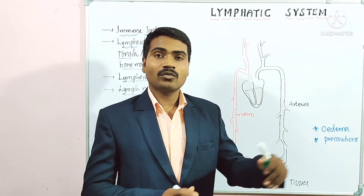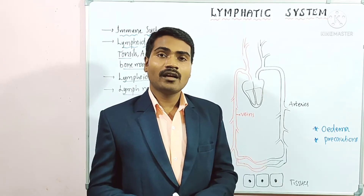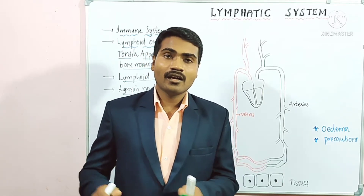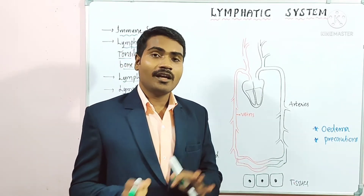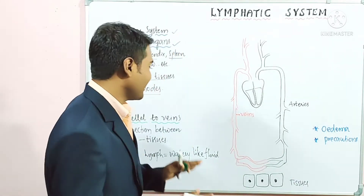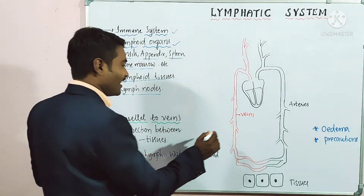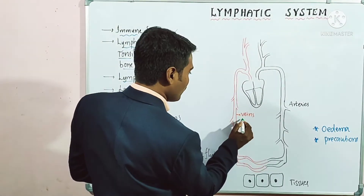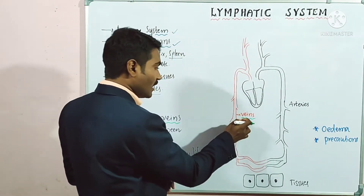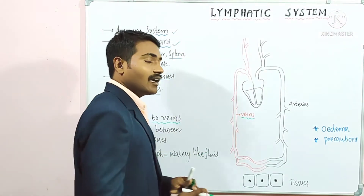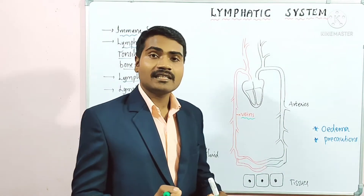The blood vessels which collect blood from all body parts are called veins. Where there are veins, there are lymphatic vessels and lymph nodes parallel to them. These are the lymph nodes shown in the diagram.